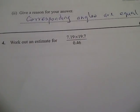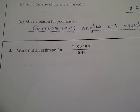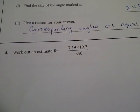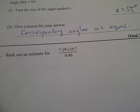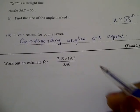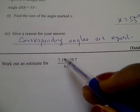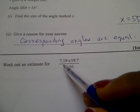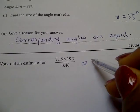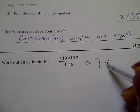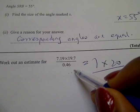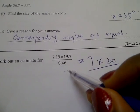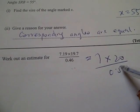Question number 4 says, work out an estimate for 7.19 times 19.7 divided by 0.46. Now, estimating each figure, you have 7.19, an estimate is 7; 19.7 is 20, and 0.46 is approximately equal to 0.5.